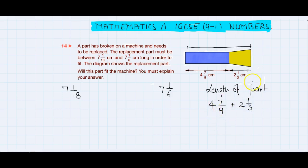So 9 times 4 is 36, 36 plus 7 is 43, that is 43/9, plus 3 times 2 is 6 and 1, 7/3.